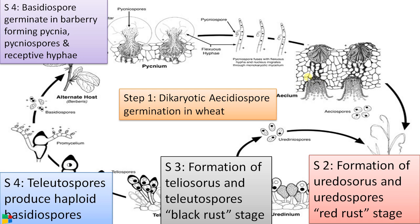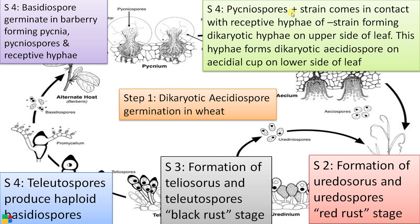This dikaryotic hyphae later forms a cup-shaped structure called the aecium. Pycniospores of the plus strain come in contact with the receptive hyphae of the minus strain, producing dikaryotic hyphae on the upper side of the leaf. These hyphae form dikaryotic aeciospores in the aecial cup on the lower side of the leaf. The aeciospores are also dikaryotic. These spores cannot infect barberry again, thus completing the life cycle in barberry — they must reach a wheat leaf for further infection.